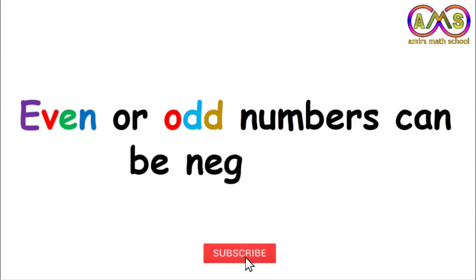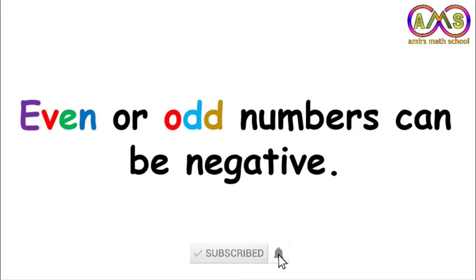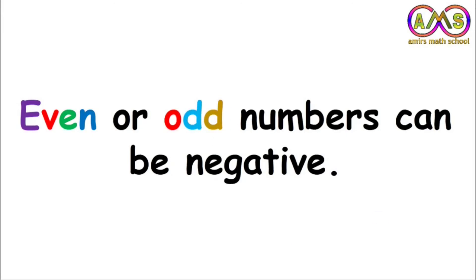Finally, we can say even or odd numbers can be negative. Here we just checked the properties of even numbers, and similarly for odd numbers. So we can say even or odd numbers can be negative.